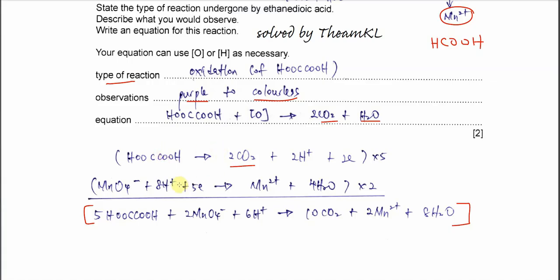For the KMnO₄ half equation: MnO₄⁻ reduces to Mn²⁺. Balance the four oxygens by adding 4H₂O on the right. Then balance hydrogen by adding 8H⁺ on the left. Finally, add 5 electrons on the left to balance the charge. To combine the two half equations, multiply the first by 5 and the second by 2, giving 10 electrons on each side. Sum left to left and right to right to get the overall ionic equation. Both the simple and ionic equations are acceptable.